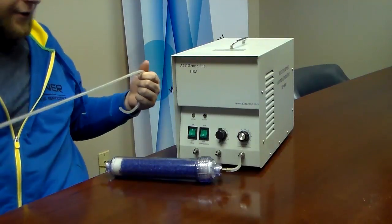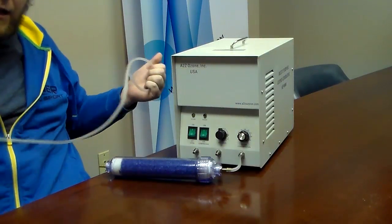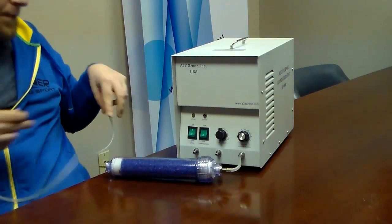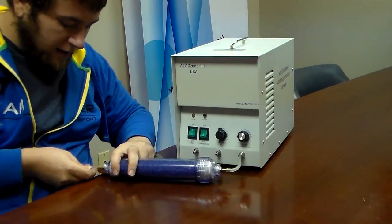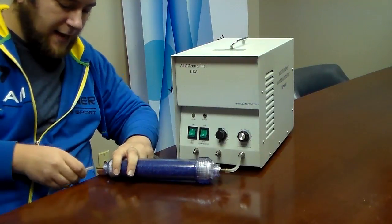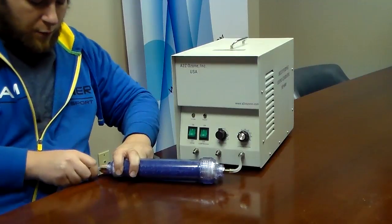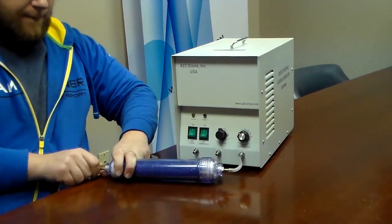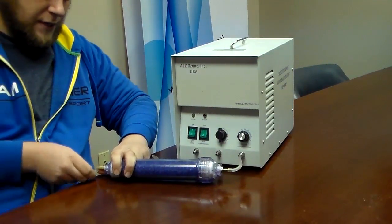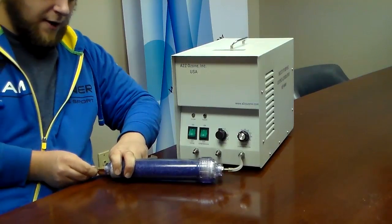Then you'll go ahead and take your other spare tubing set that comes with your MP series unit and you'll go ahead and connect it onto the other side, which is the air out for this particular air dryer.